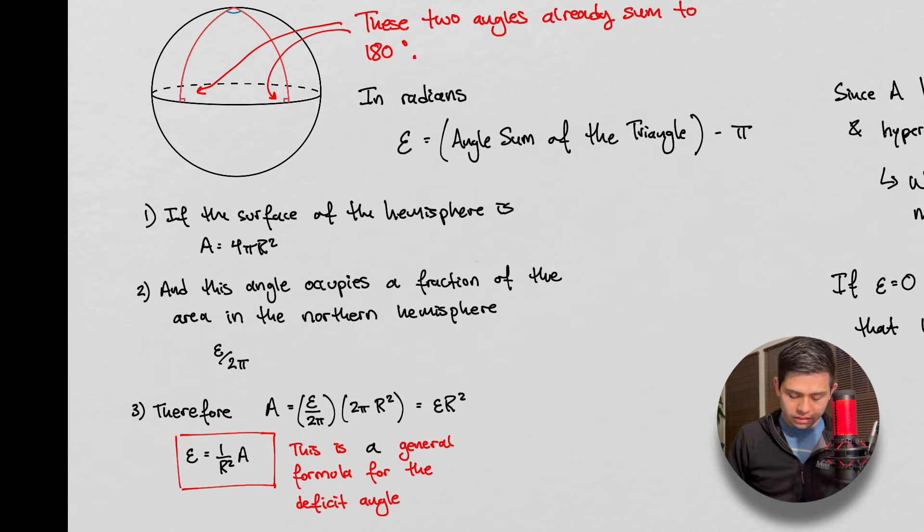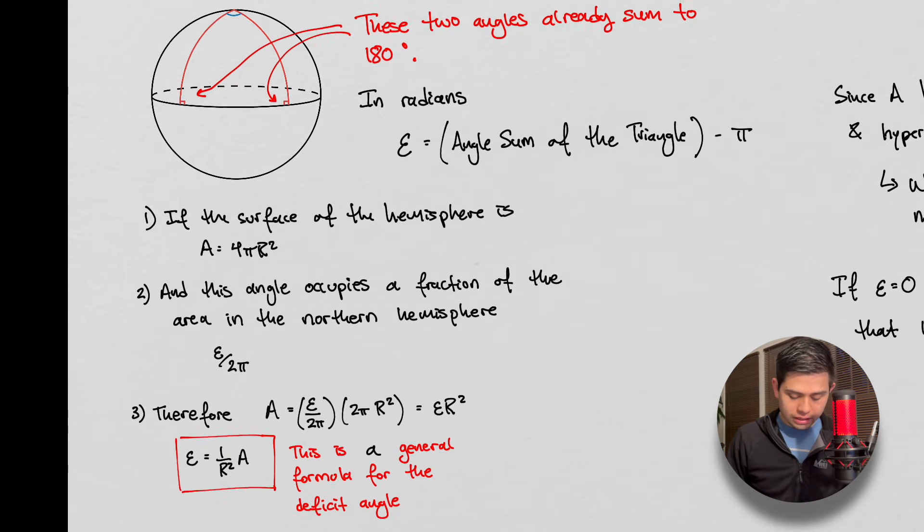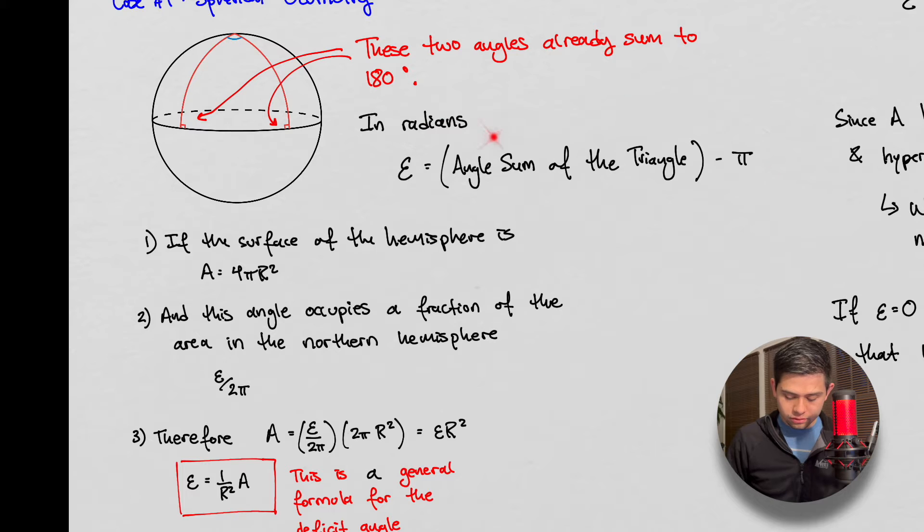epsilon, is equal to the angle sum of the internal triangle, this triangle right here, minus π, because in radians π corresponds to 180 degrees. And so, this is all in radians. This is going to give us the change in that angle. If it was just π, because π again is 180, that's flat space. This here takes into account the change when we're going into spherical geometry.